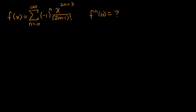We're told that f of x is equal to this infinite series, and we need to figure out what is the third derivative of f evaluated at x equals zero. There are two ways to approach this: one is we could take the derivative of this expression while it's in sigma notation, or we could expand out f of x and take the derivative three times.